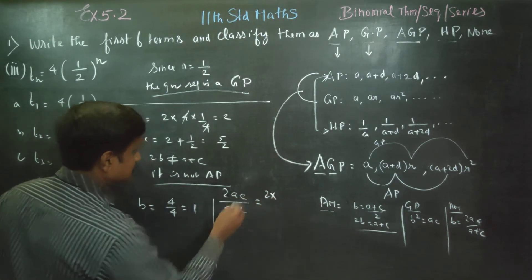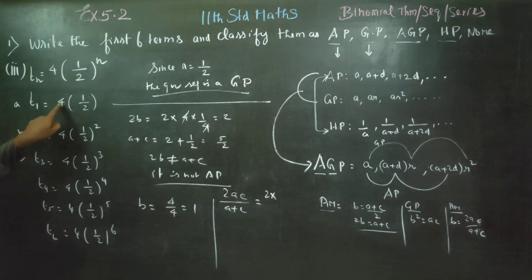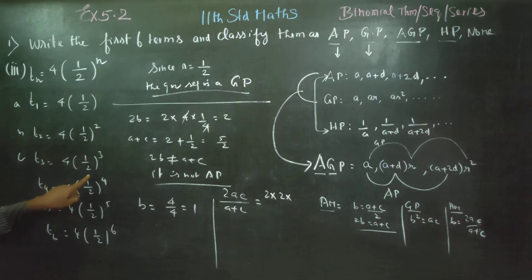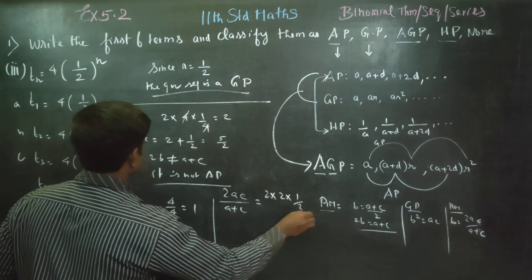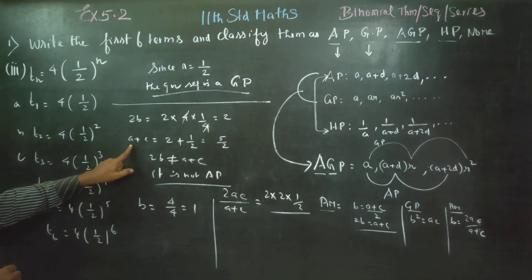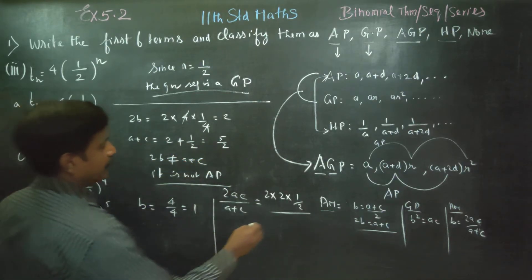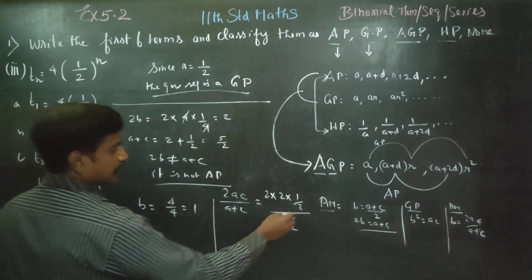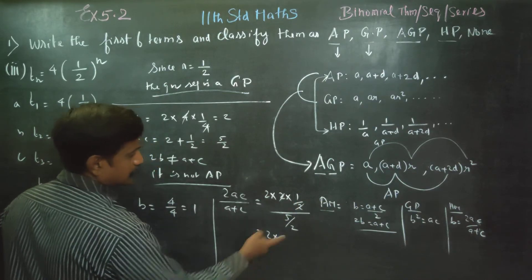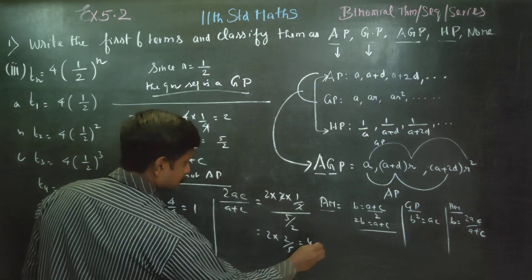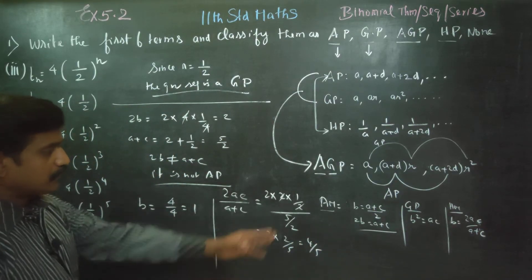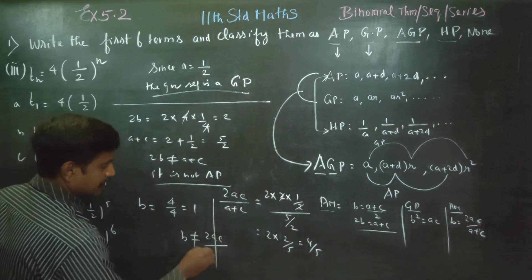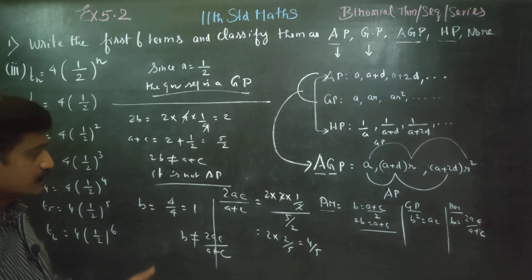Check: 2 into AC, what is my A? 2. What is my C? 4 into 1 by 8, that is 1 by 2. Right. A plus C, A plus C: 5 by 2. Cancel 2, 2 into 2 by 5, answer is 4 by 5. Are they equal? B is not equal to 2AC by A plus C, and this is not HP.